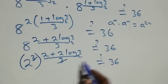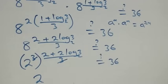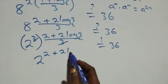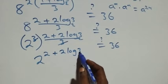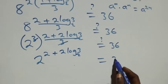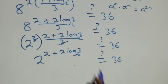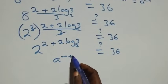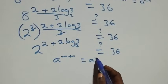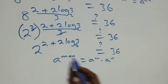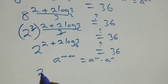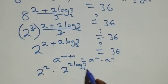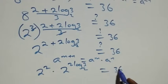So we are left with 2 raised to power (2 plus 2 log 3 base 2). Is this equal to 36? From the law of indices, a raised to power m plus n equals a raised to power m times a raised to power n. So this becomes 2 squared times 2 raised to power 2 log 3 base 2, equals 36.